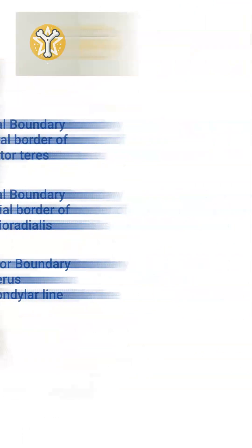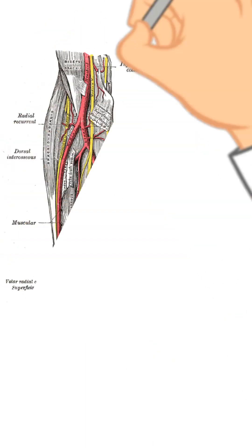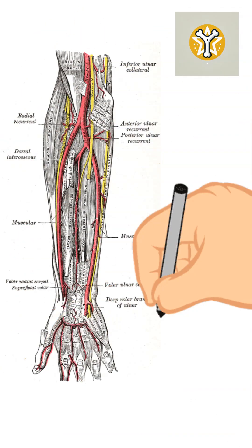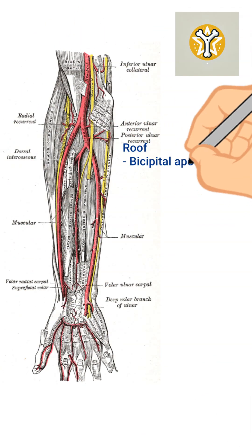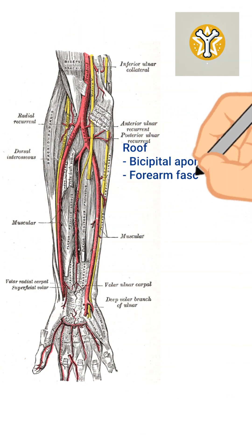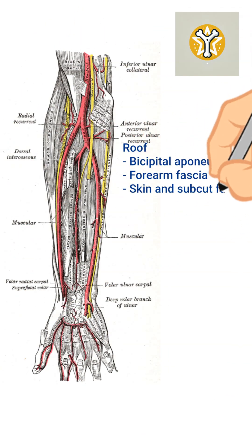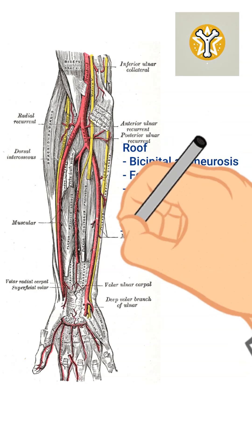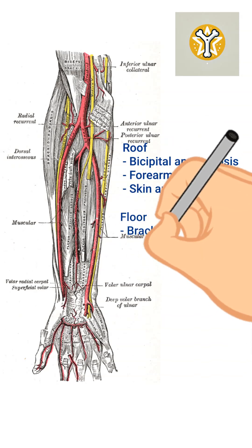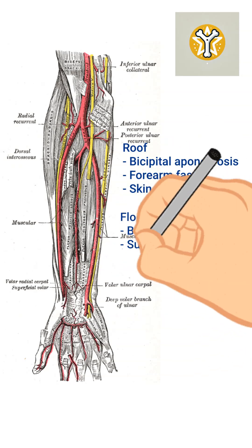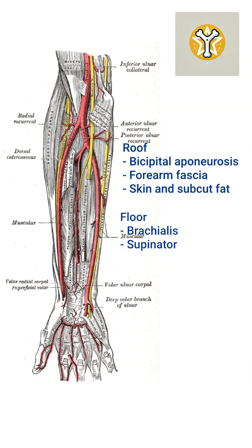The roof is the deep fascia of the forearm and the bicipital aponeurosis. The floor is predominantly brachialis, and then laterally the supinator muscle.